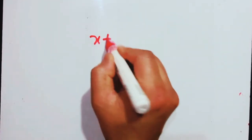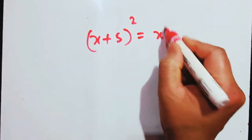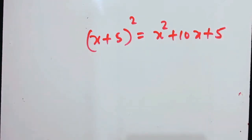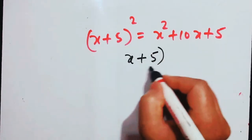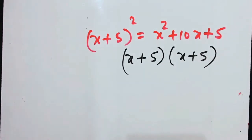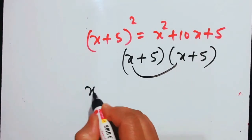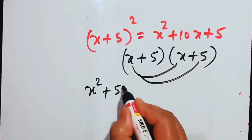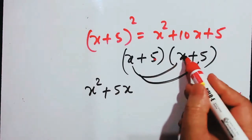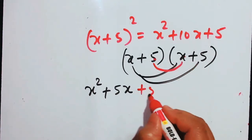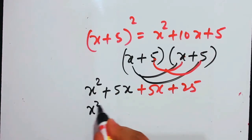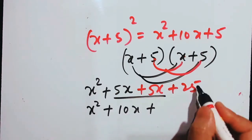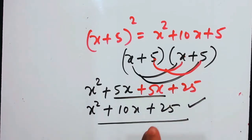Many of you might be confused how x plus 5 whole squared equals x squared plus 10x plus 25. Let me multiply: x plus 5 multiplied by x plus 5. We get x into x equals x squared, x into 5 equals 5x, 5 into x equals 5x, and 5 into 5 equals 25. So x squared plus 5x plus 5x plus 25 equals x squared plus 10x plus 25. I hope that doubt is now clarified.